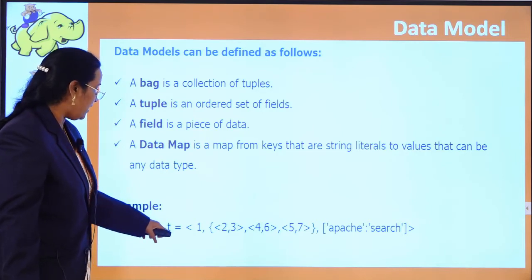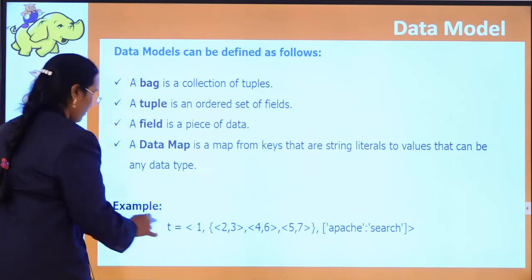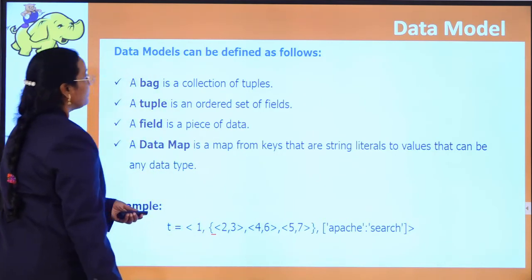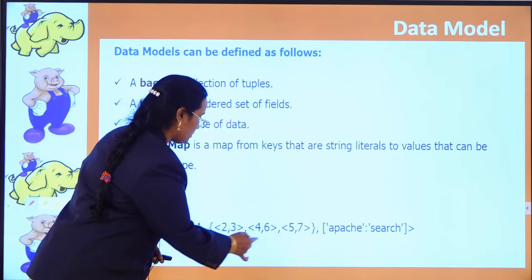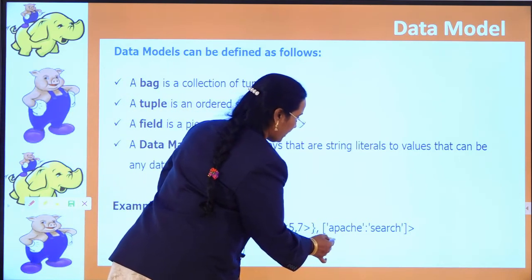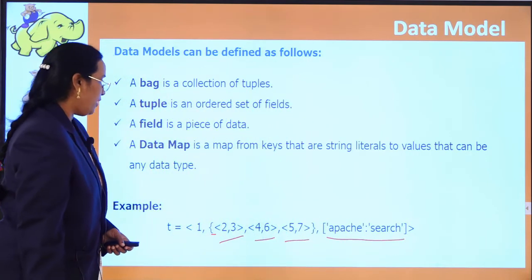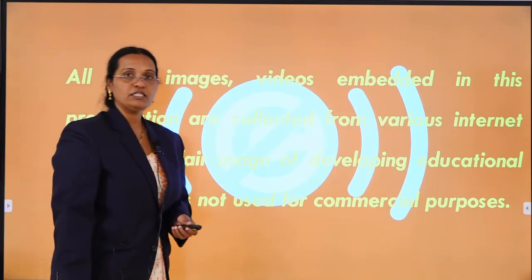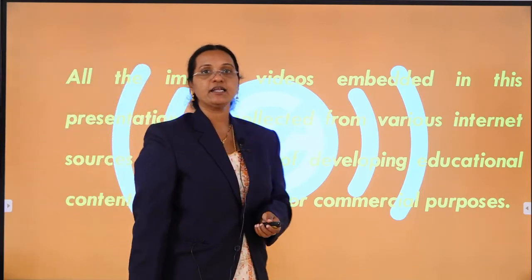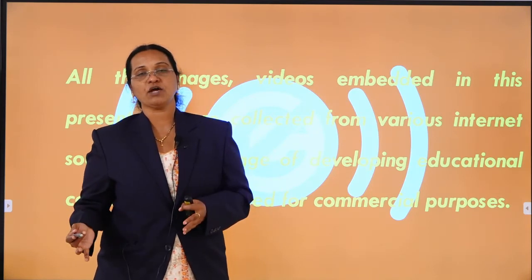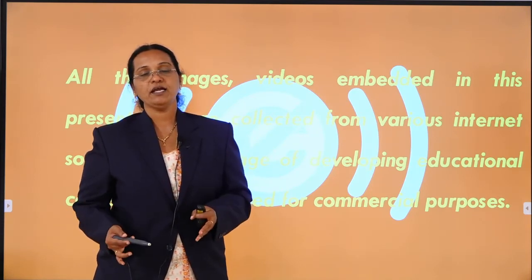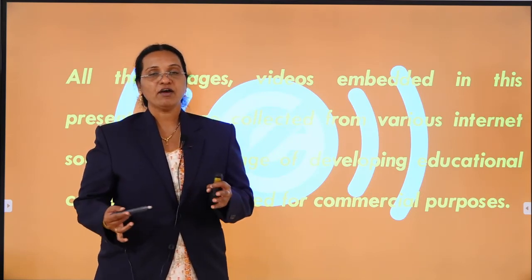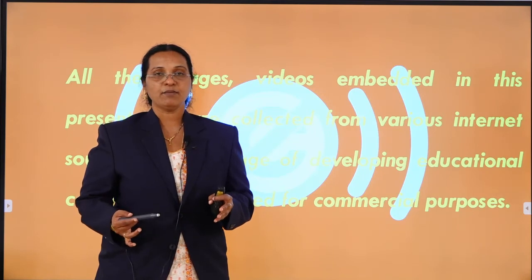To summarize the data models: a bag is a collection of tuples, a tuple is an ordered set of fields, a field is a piece of data, and a map is a set of key-value pairs. In today's lecture we learned about the different program structures of PIG — script, grunt, and embedded — and we learned about PIG data types such as integer, char arrays, etc., from the lang and Apache packages.